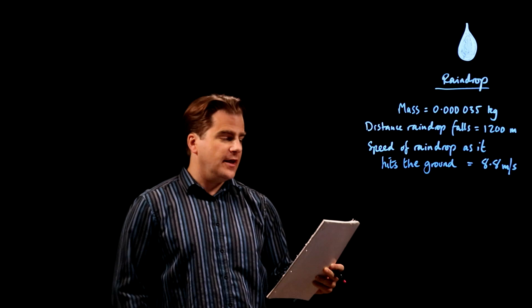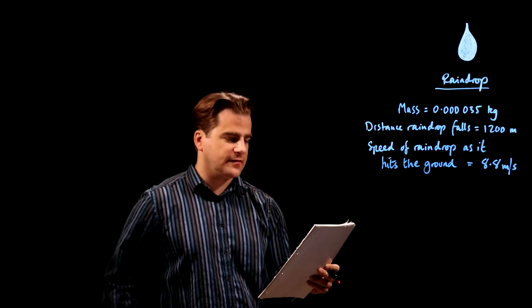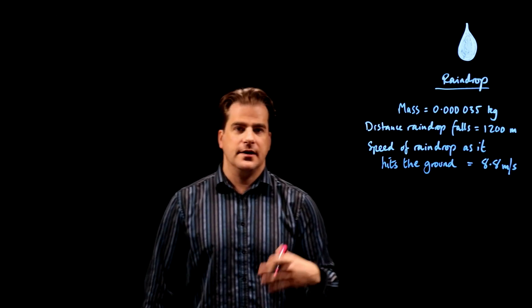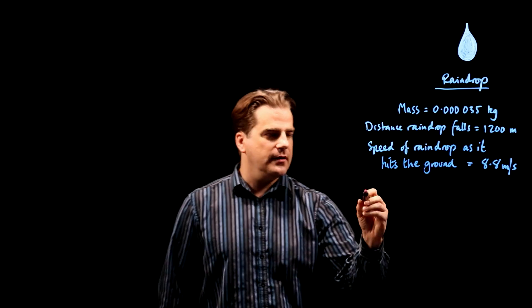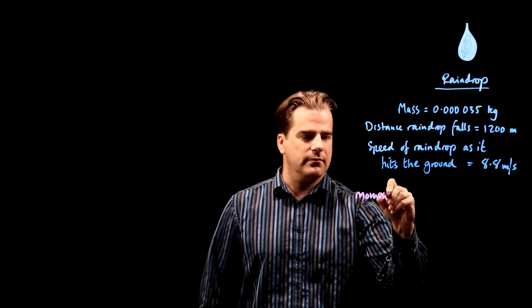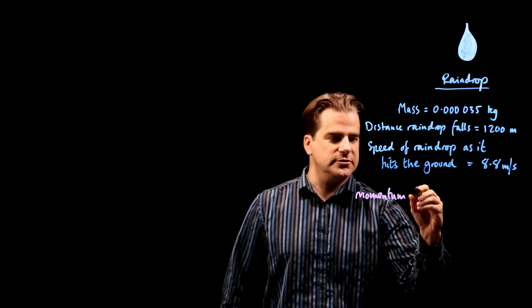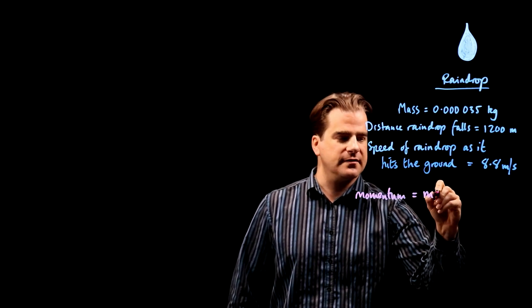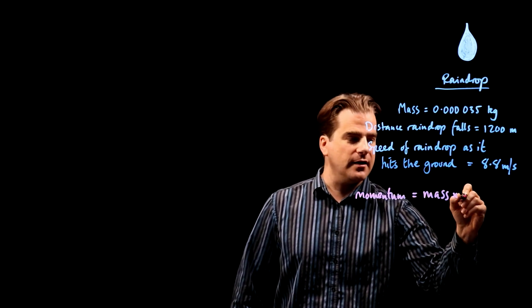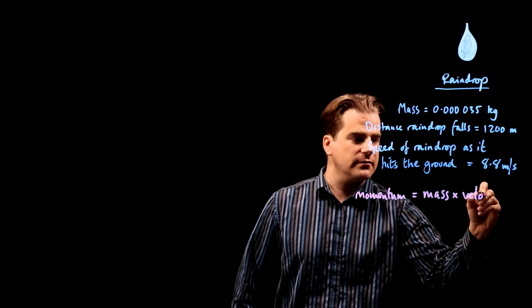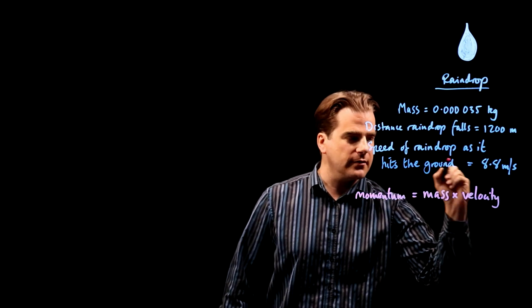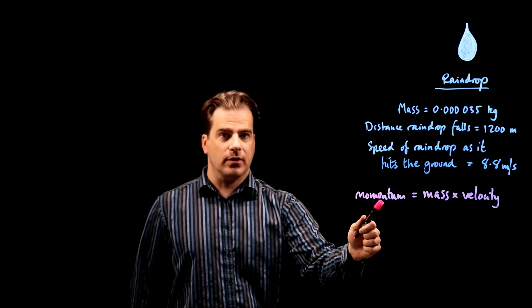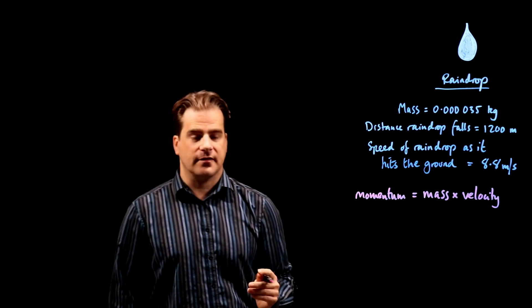State the relationship between momentum, mass and velocity. Okay, you've just got to know this off by heart. Momentum of an object is equal to its mass multiplied by its velocity. It's a vector quantity because velocity is a vector, so momentum is a vector.